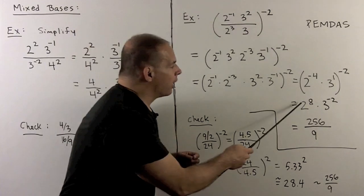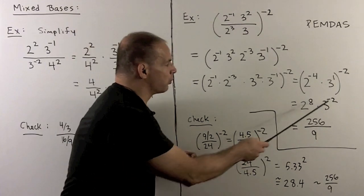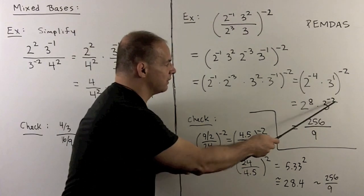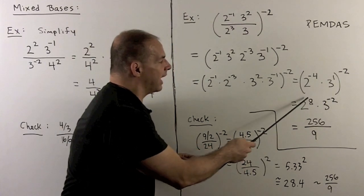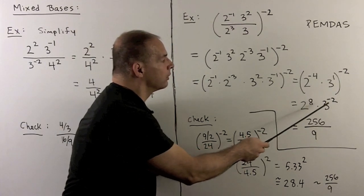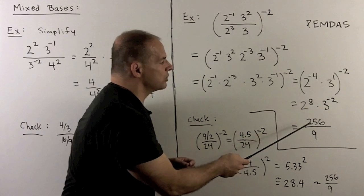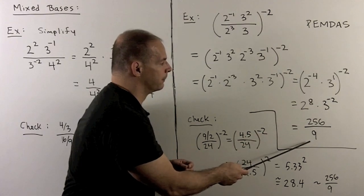Now it's just a matter of rearranging to get positive exponents. We have two to the eighth over three squared, which is 256 over nine.